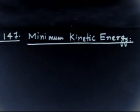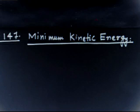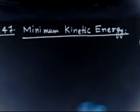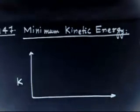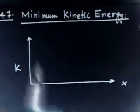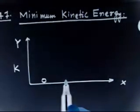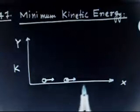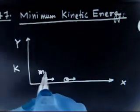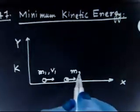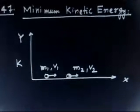This is a good problem — it covers the concept of center of mass frame. The question says: in reference frame K, two particles travel along the x-axis. So we have reference frame K with an x-axis and y-axis. Two particles move along the x-axis: mass m1 with velocity v1, and mass m2 with velocity v2.